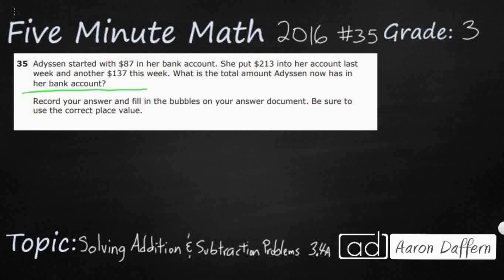Addison started with $87 in her bank account. So I'm just going to put an 87 right here because that's what she's starting with. We're going to do something with that 87, add to it or subtract from it. So she put $213 into her account. When you put money into your account, that is called a deposit. When you take money out of your account, that is called a withdrawal. But that's a deposit, which means we're going to add $213.